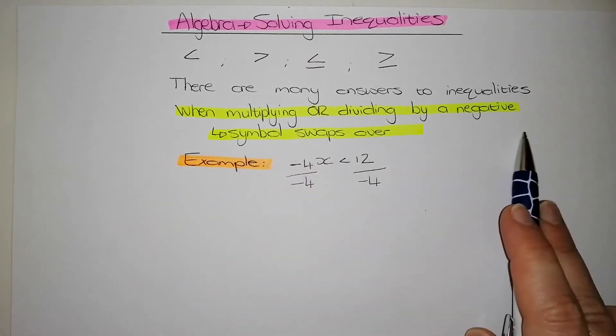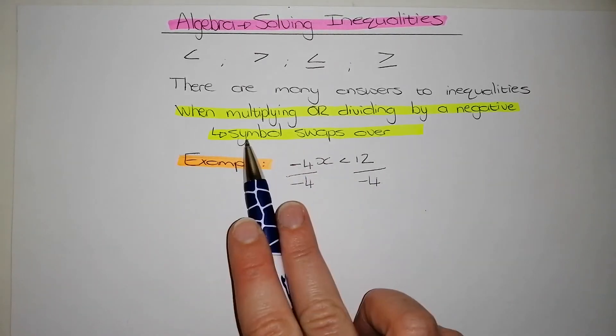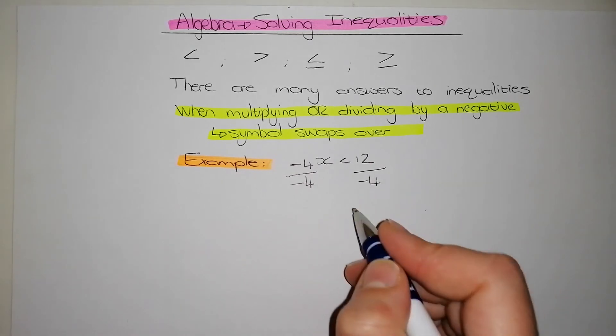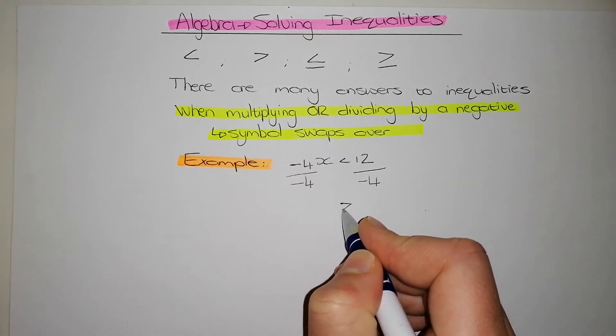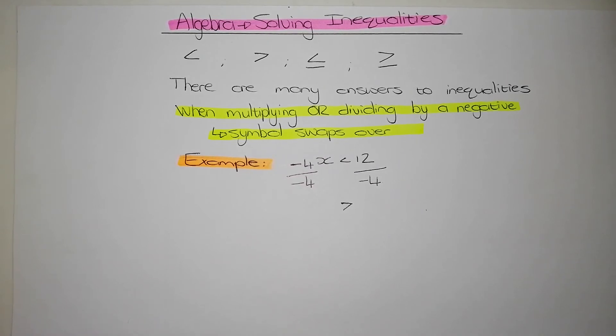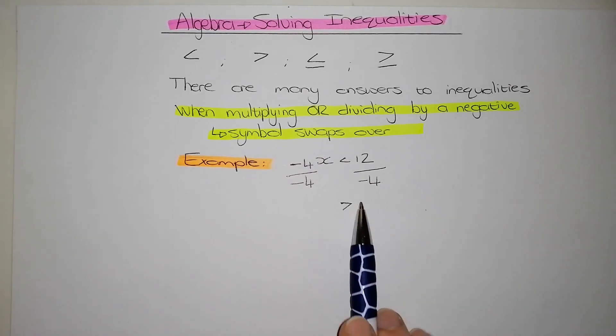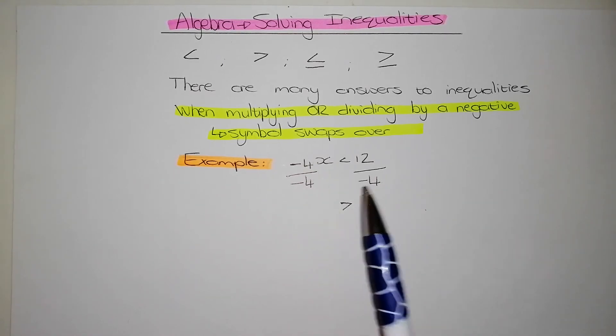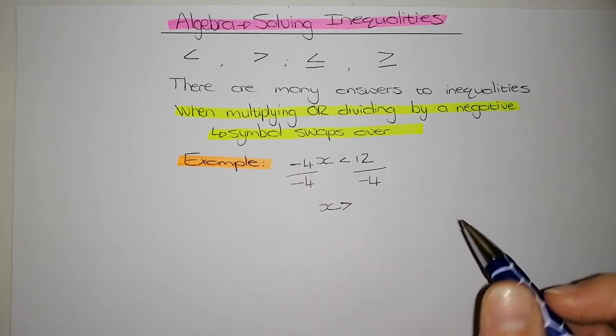Remember the very important rule that when we are dividing or multiplying by negative, the symbol swaps. So the first thing I'm going to do is I am going to rewrite my symbol facing the other way. After I've swapped my symbol around, now I can simplify these. So negative 4 divided by negative 4 is 1. Therefore my x is alone.